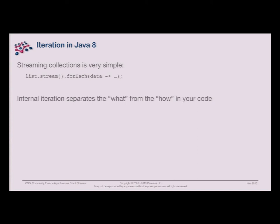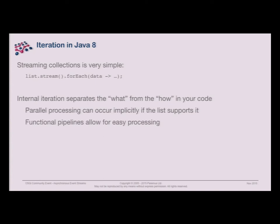Java 8 streams are really simple. They do the iteration we saw with loops before, but we don't have a loop. We've separated the 'what we want to do' from the 'how we want to do it' because we don't really care how we iterate — we just want each element in turn, so we let the collection do that for us. You can also get parallel processing here if the list supports it, without having to split the list up and submit to different threads — it's handled transparently.